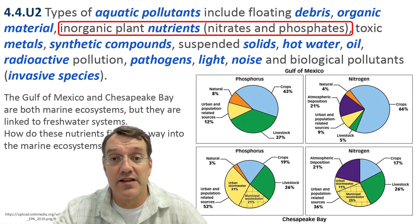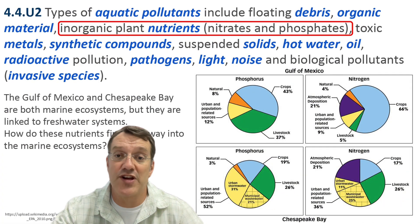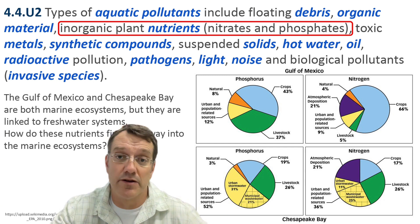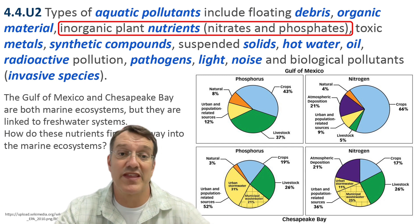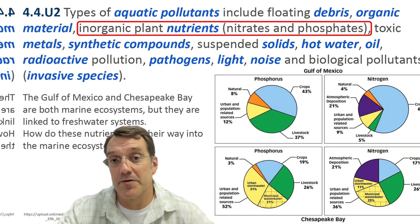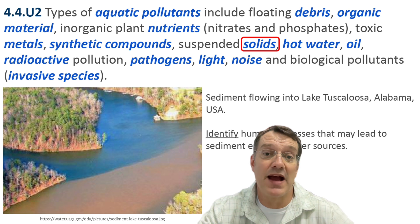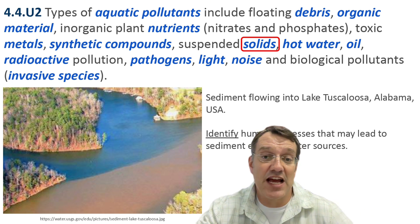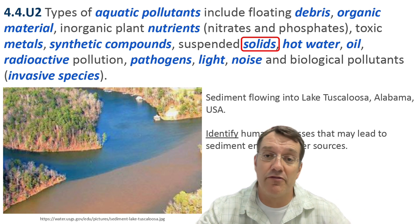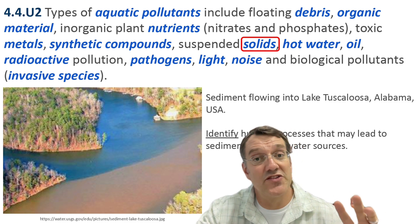Nutrient pollution, particularly from nitrates and phosphates, represents another major challenge. As we saw earlier, these nutrients come from various sources with agriculture being usually the biggest contributor. Suspended solids like the sediment we see flowing into Lake Tuscaloosa can severely impact water quality. This type of pollution often results from construction, agriculture, and other land use changes that increase erosion.